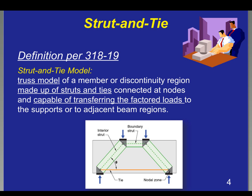Strut-and-tie is actually defined in ACI 318 as a truss model of a member or discontinuity region made up of struts and ties connected at nodes and capable of transferring the factored loads to the supports or adjacent beam regions. As you can see on the screen, the terminology we need to use: a tie is the tension element — we only count the rebar, we don't count concrete in tension. The strut is the compression part, and the nodal zone is where the compression and the tie intersect — that gray, now purple, area.